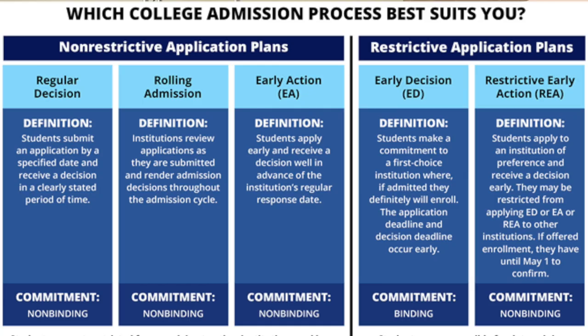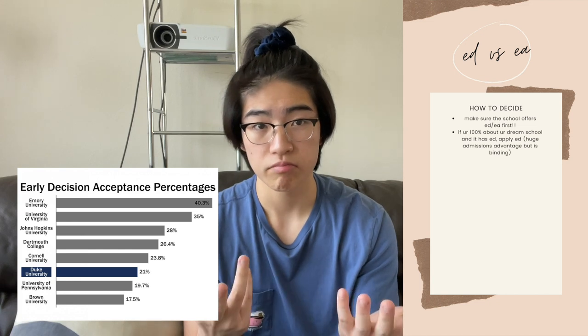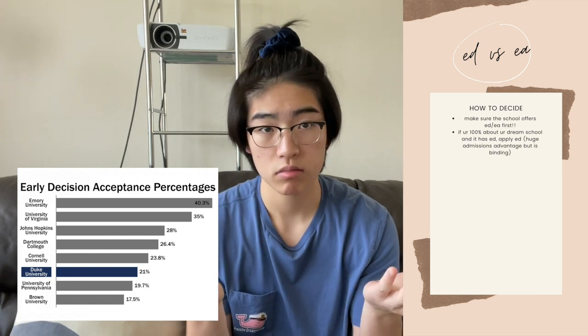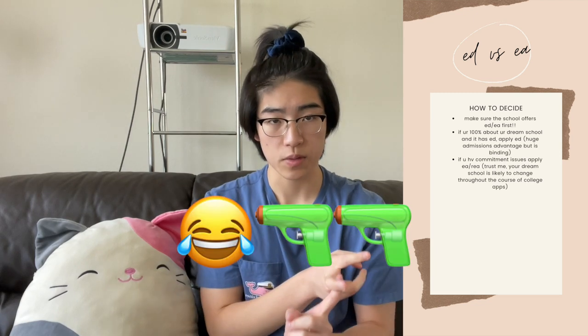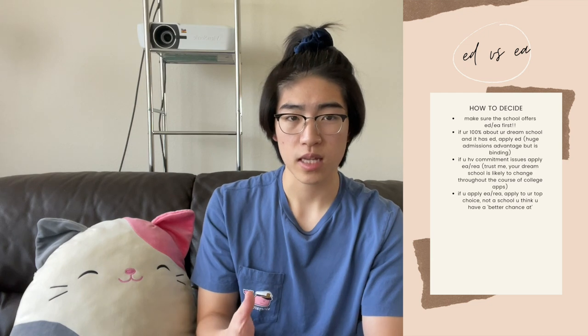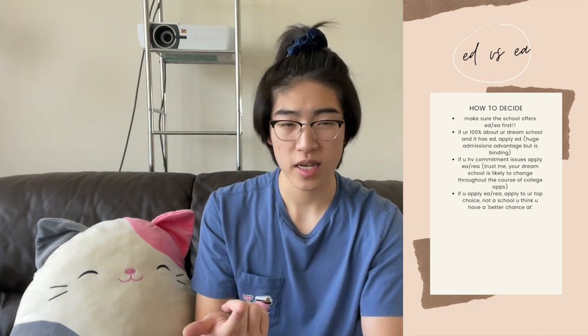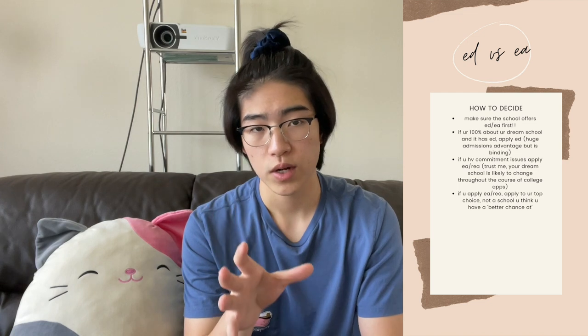Applying ED is binding, meaning that if you get in, you have to go — you sign like a contract — and it increases your chances by like two to three times. So if your dream school offers ED, do it. On the other hand, if you want to apply EA or REA, I would suggest applying to your top school. I know a lot of elite applicants who get into a school EA or REA, but then get in nowhere RD. So apply to your top choice rather than trying to game the chances.